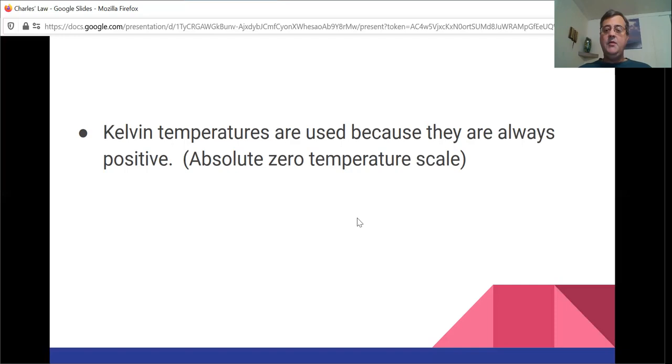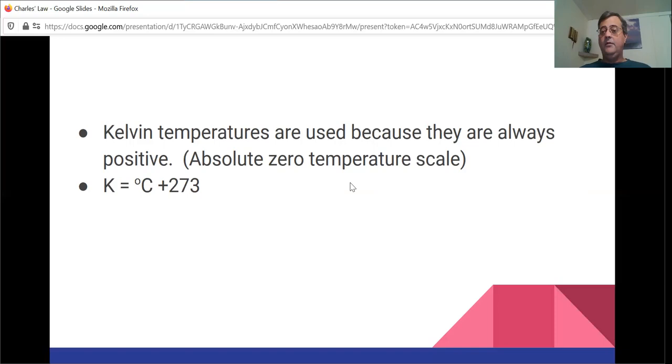So again, Kelvin temperature is degrees Celsius plus 273. So if I tell you it's 10 degrees Celsius outside, that means it's 283 Kelvin. If I tell you it's minus 10 degrees Celsius outside, which is never going to happen here in El Centro, then it's 263 Kelvin. Okay. It's just addition. Barely need a calculator for it.